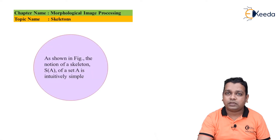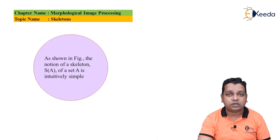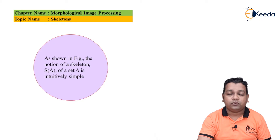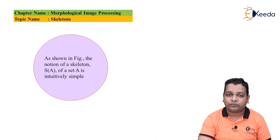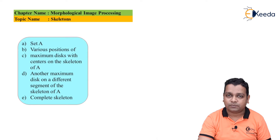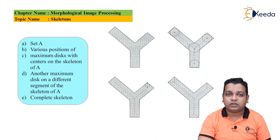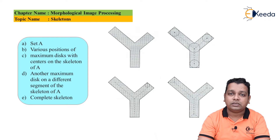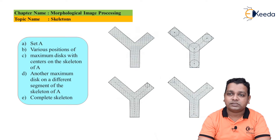We start with our topic on skeletons, represented as S(A) for the set A. In the figure, we have four portions. Part A on the top-left represents the exact set A. In part B on the right side, various positions are marked with circles and corners so that we can find the skeleton.